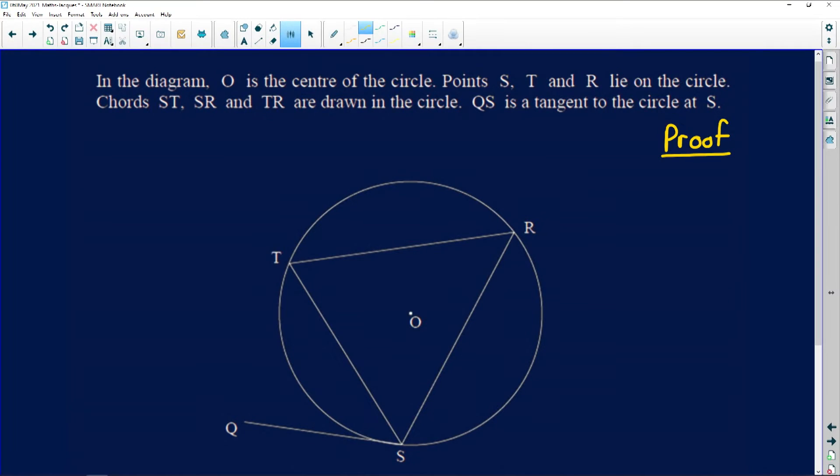Let's have a look. It says in the diagram we have the center O given. Notice that there's no line going to O over here, but it's still the center of the circle - we can't really do anything with it yet. The points S, T, and R lie on the circle. There's S, there's T, and there's R - they are three points that lie on the circle.